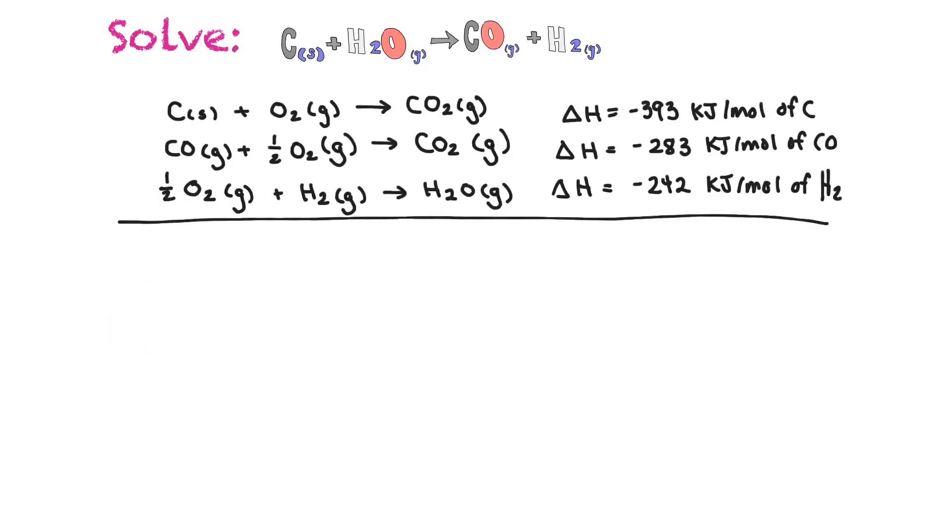So let's rewrite these. So the first one, we can keep the same. So we have C solid plus O2 gaseous makes CO2 gaseous. And we keep our delta H the same. Delta H equals negative 393 kilojoules per mole of carbon. The next one, we decided we were going to flip. So now it's going to be CO2 in a gaseous state produces carbon monoxide, also gaseous, plus 1 half O2, which is gaseous. And our delta H now is going to be positive 283 kilojoules per mole of CO.